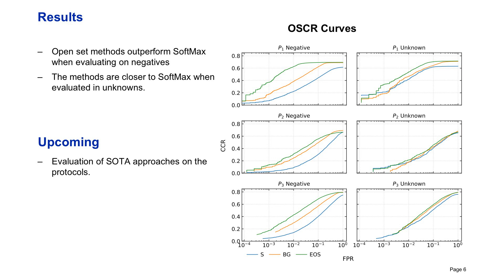Finally, the results show that for every protocol, the softmax with background class and entropic open set classifiers outperform the standard softmax approach when rejecting negatives. However, when the classifiers face unknown samples, the performance drops to values similar to the softmax models, especially for protocols two and three, suggesting that although some methods claim to handle unknown classes, they might not scale well to more diverse data or scenarios closer to real-world applications.